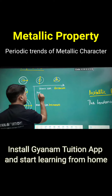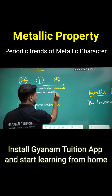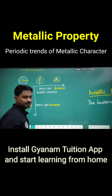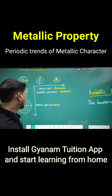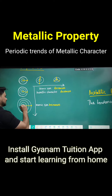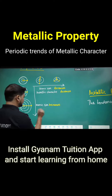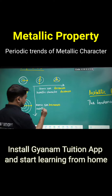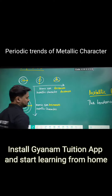The metallic factor increases in the right direction. The tendency of the electron will increase in the right direction. If there is a metallic character, this is the amount of metallic power — it increases.